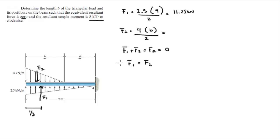F1 is equal to F2, because assuming that upward is positive, you can see that F2 is negative. They're both equal to zero, so this has a magnitude of 11.25 kN. So 4 times B over 2 is equal to 11.25. B is equal to 5.625 meters.